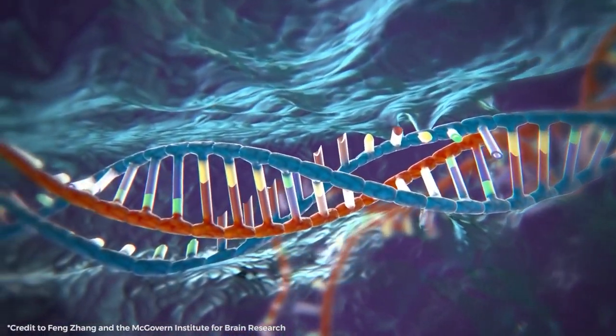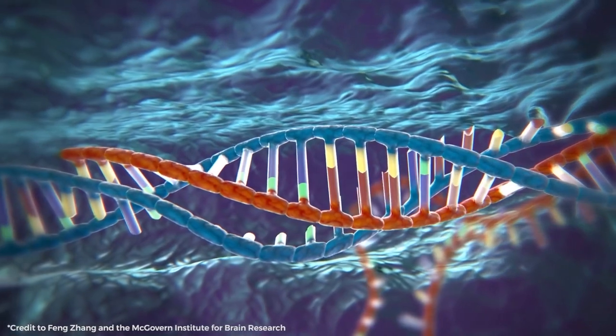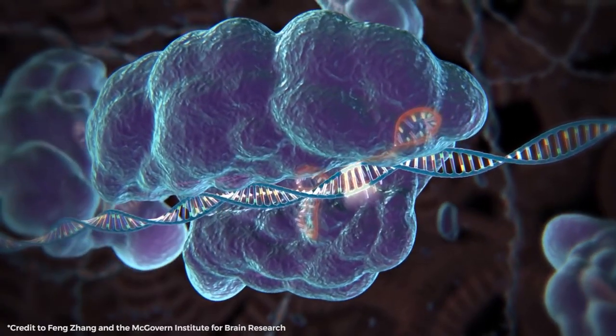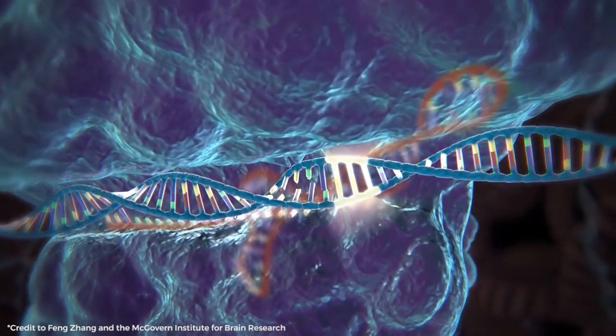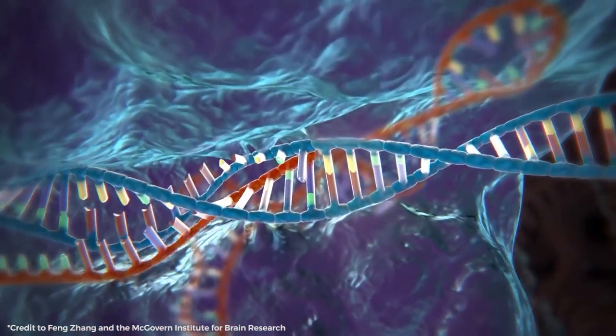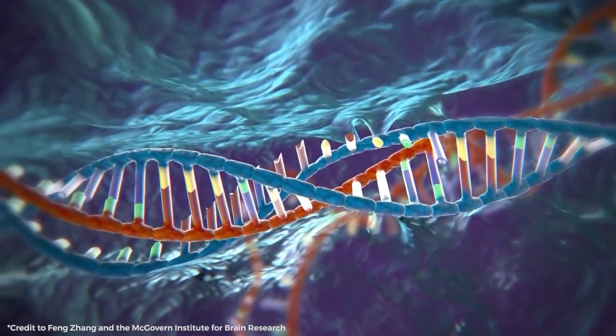CRISPR can only bind to its target under two circumstances. Cas9 must first attach to the target sequence in a certain PAM, a three-code variant in DNA called protospacer-adjacent motif. Cas9 can identify the majority of PAMs, since they have the code GG.